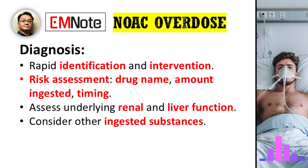Without routine lab tests to guide us, what are the first steps in diagnosing a potential NOAC overdose? What essential information should we be gathering from the patient or their family? Rapid identification and intervention are paramount. The first step is a thorough risk assessment. You need to obtain key details: the exact drug name, the amount ingested, and the precise timing of the ingestion. You also need to assess the patient's underlying renal and liver function, as these play a significant role in drug elimination and toxicity. Other ingested substances must also be considered, particularly in cases of intentional overdose.